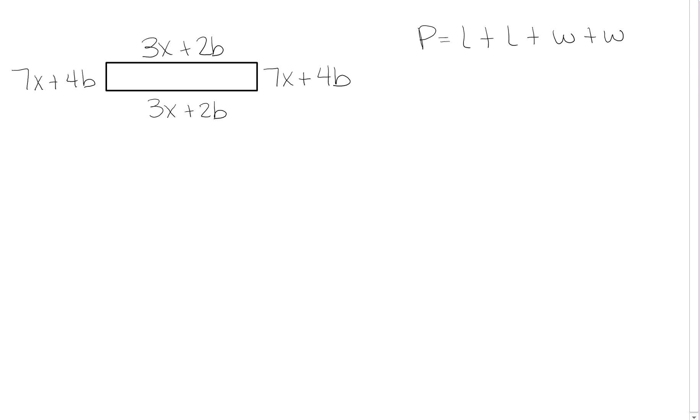So I'm going to say the length is 3x plus 2b. So the perimeter is 3x plus 2b plus another 3x plus 2b.